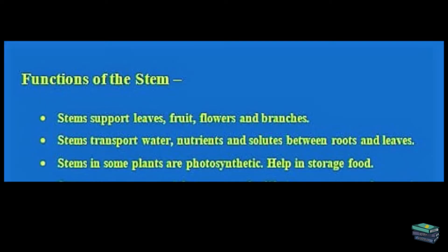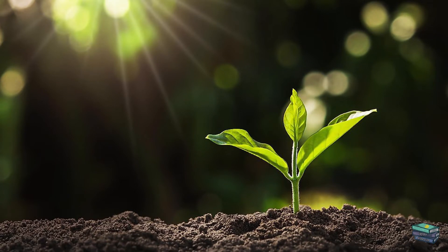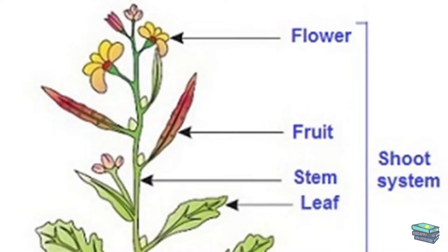The three functions are: first one, support; second one is transportation; and third one is food storage. First we see the support. The stem gives a structure to a plant and helps the plant to stand upright. It also...